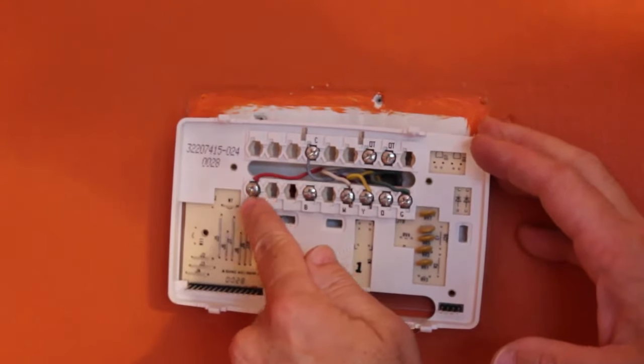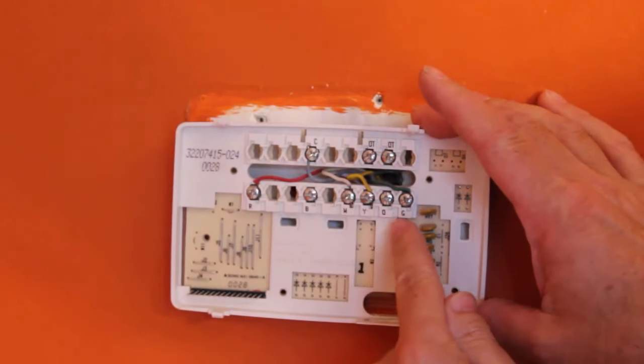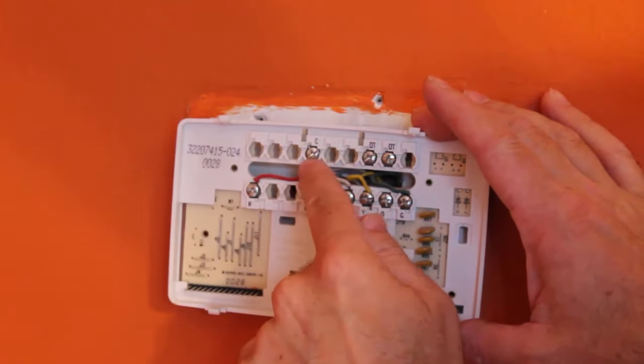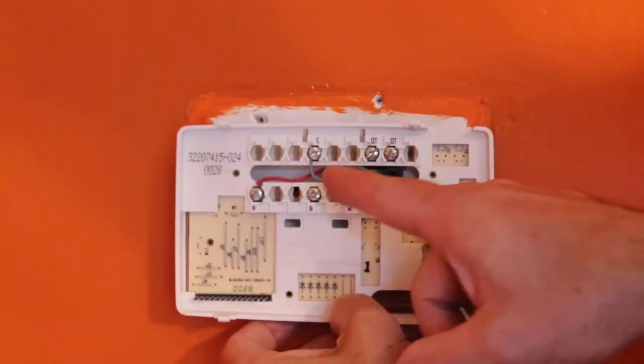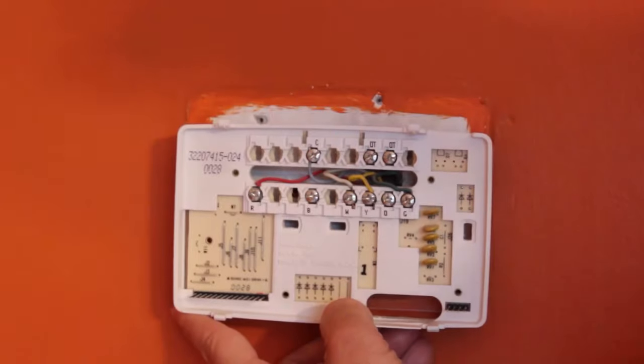So I have a red wire here. I've got a white wire, a yellow wire, a green wire. And then I have a light blue colored wire here. So take that picture and use it as a reference when putting in your new thermostat.